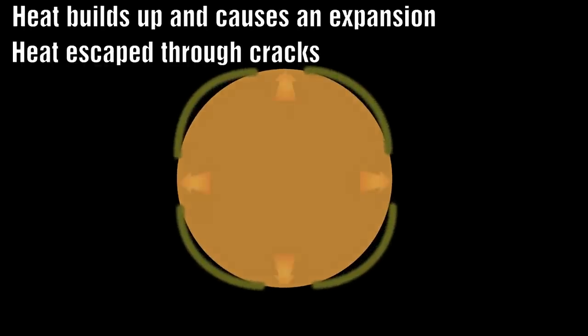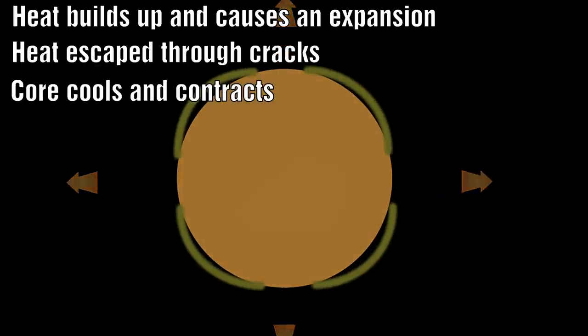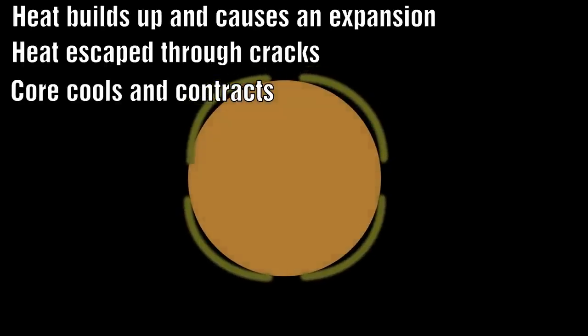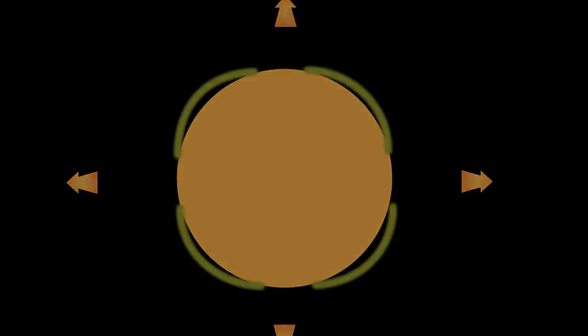Joly assumed that heat flowed from the radioactive decay inside the earth and surpassed the cooling of the earth's exterior. Together with British geologist Arthur Holmes, he proposed a hypothesis in which the earth loses its heat by a cyclic period of expansions. This expansion would lead to cracks and joints in the earth's interior, which could fill with magma. This was then followed by a cooling phase where the magma would freeze and become solid rock again, causing the earth to shrink.